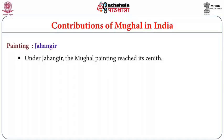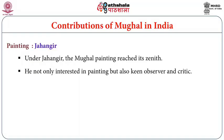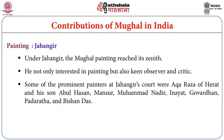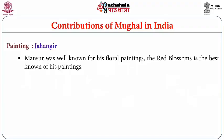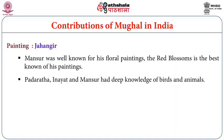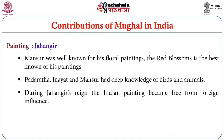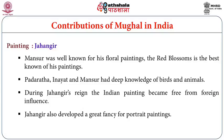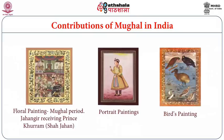The golden period of Mughal painting began with Jahangir. Under him, Mughal painting reached its zenith. He was not only interested in painting but was also a keen observer and critic — it is said he could identify the painter just by looking at a work. Prominent painters at his court included Aqa Raza of Herat and his son Abul Hasan, Mansur, Muhammad Nadir, Inayat, Govardhan, Padarath, and Vishandas. During Jahangir's reign, Indian painting became largely free from Persian influence.